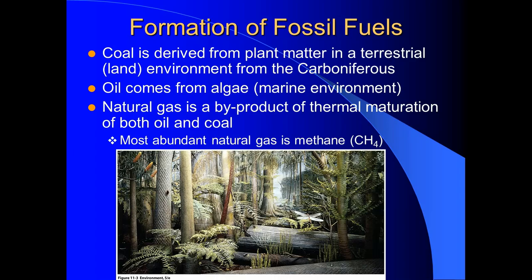The most abundant and widely used natural gas is methane — CH₄. When they say a bus is running on natural gas, usually it's methane. CH₄ is a polyatomic molecule, which means methane is a greenhouse gas.